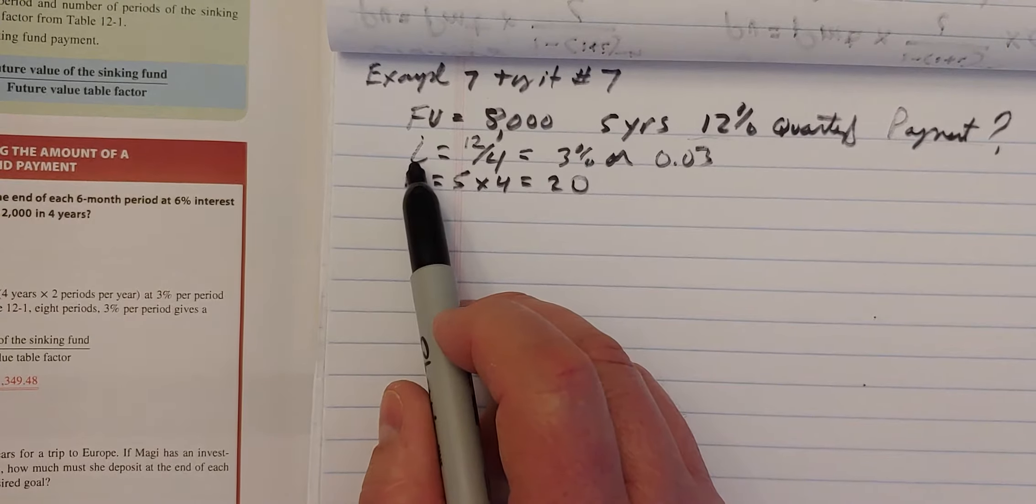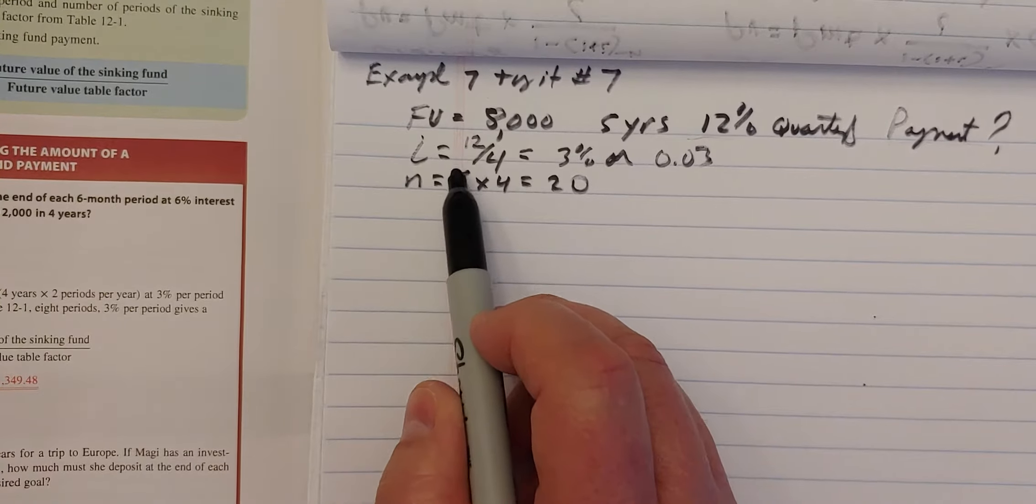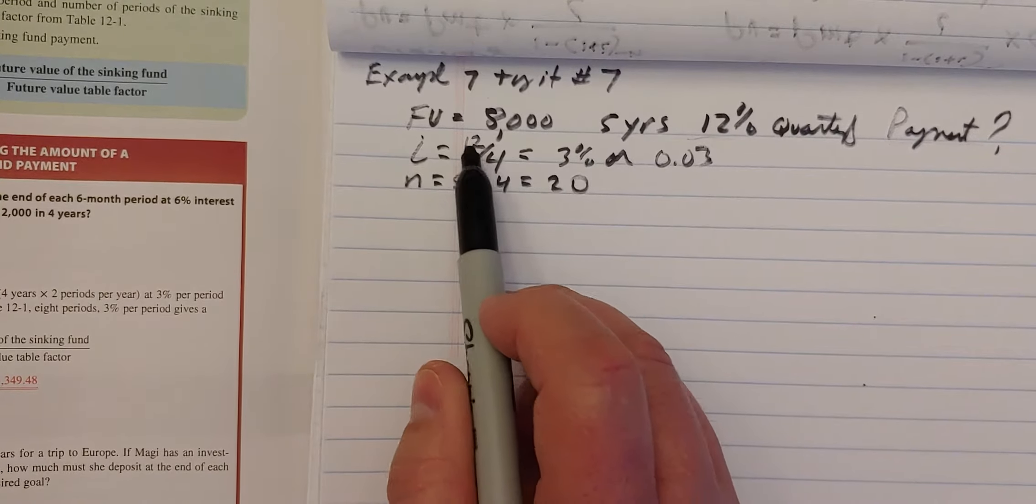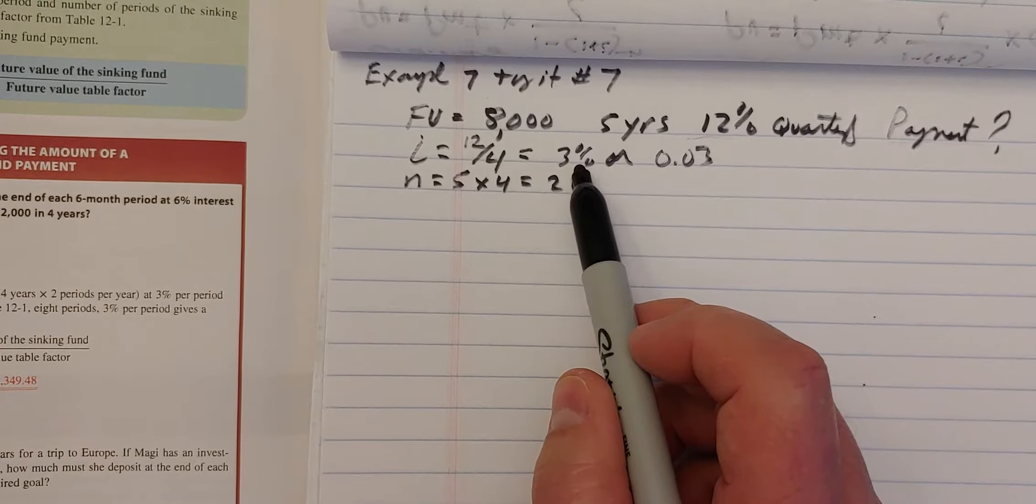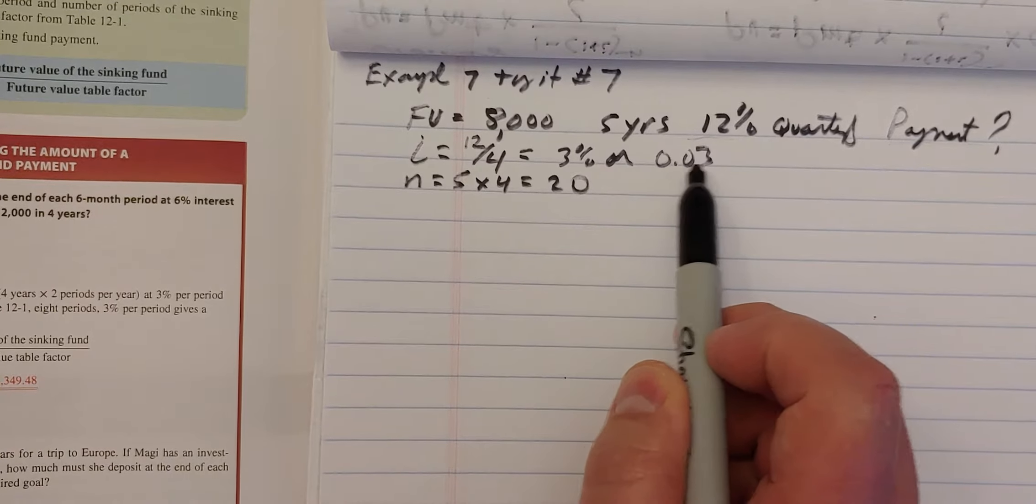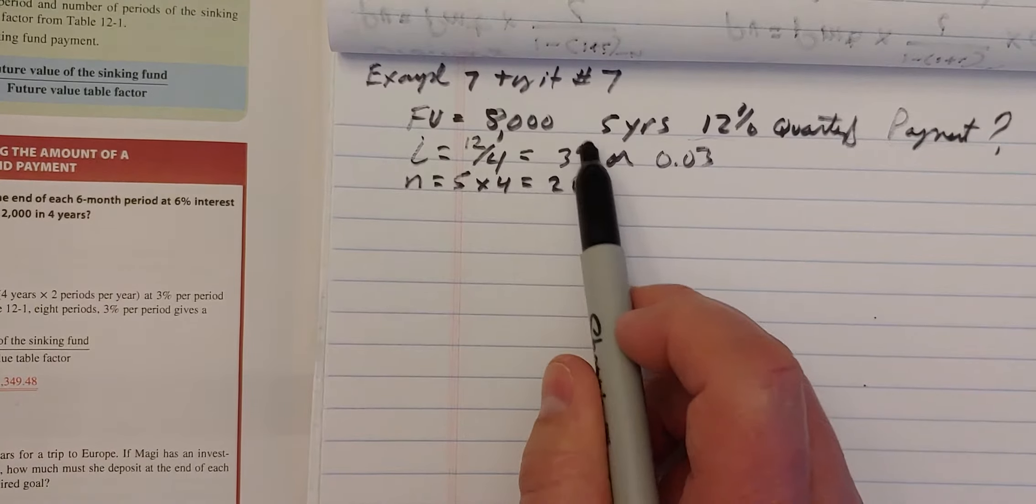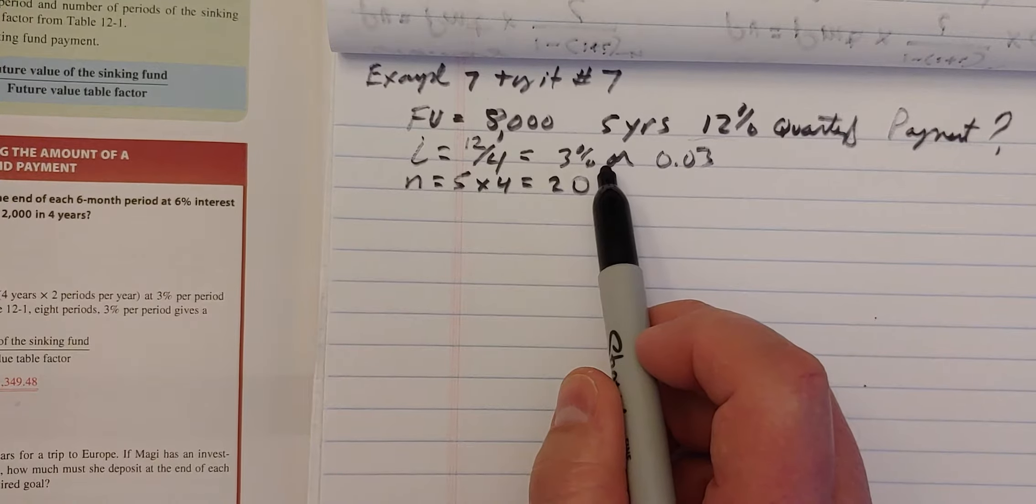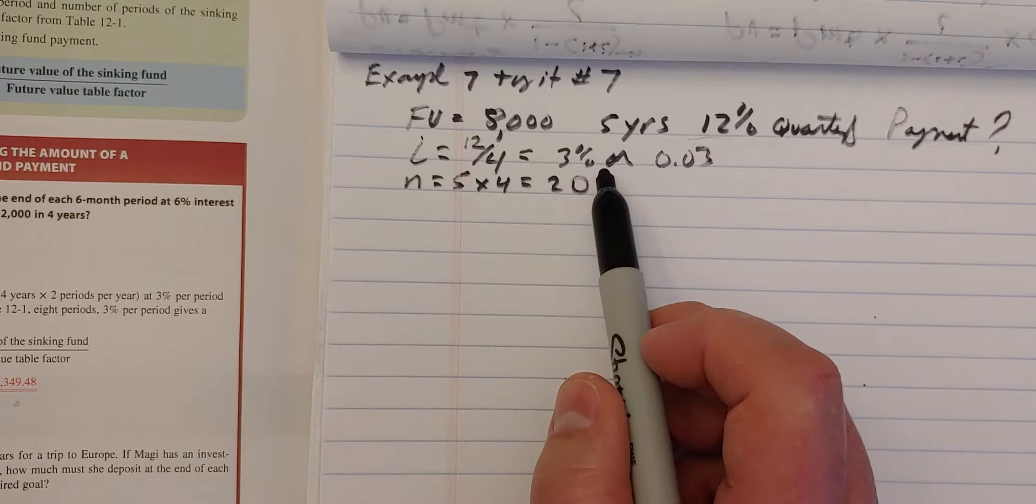So we still need to figure out I. So at 12% and at quarterly, it's 12 divided by 4. So that's 3% a quarter. Or 0.03 if you eventually use the formula. But for this case, we just need to know 3% for the table. Because we're using the table factors.